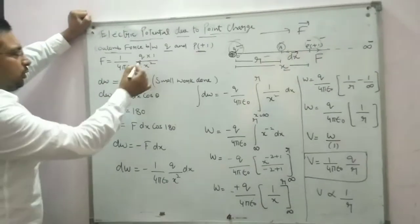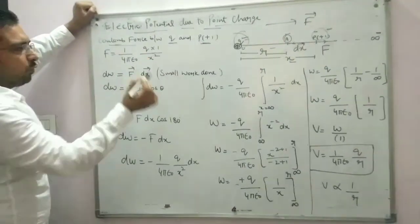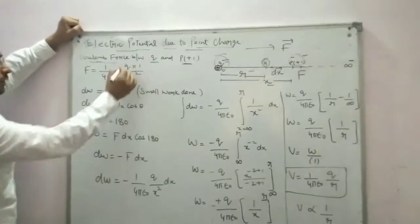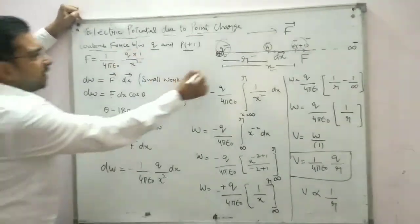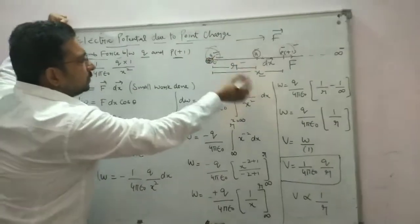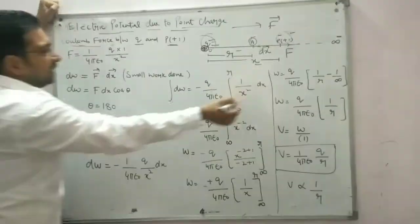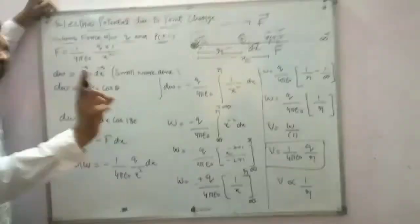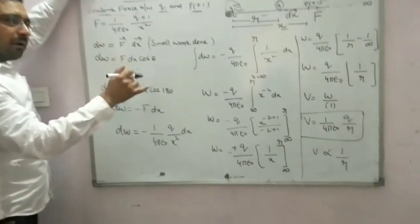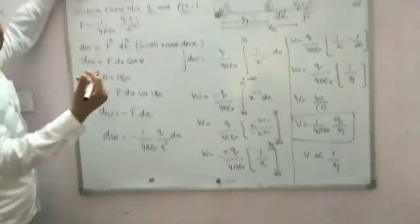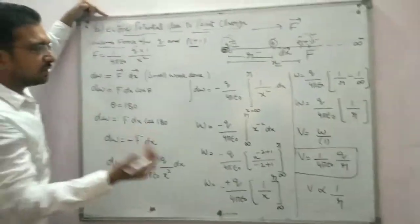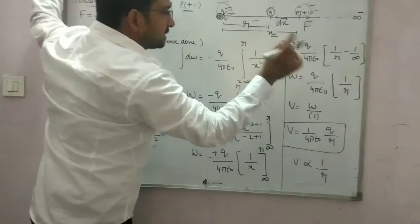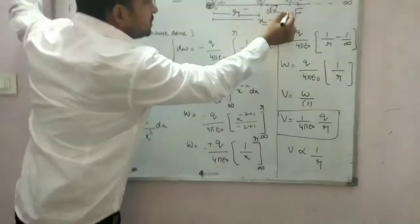The formula for Coulomb force is: F = (1/4πε₀) × first charge × second charge (which is unit 1) over r squared. So F = (1/4πε₀) × Q over x squared, where x is the distance.